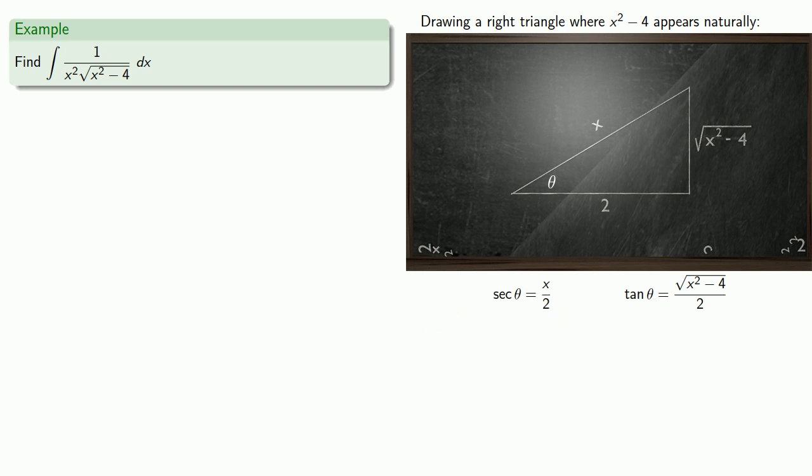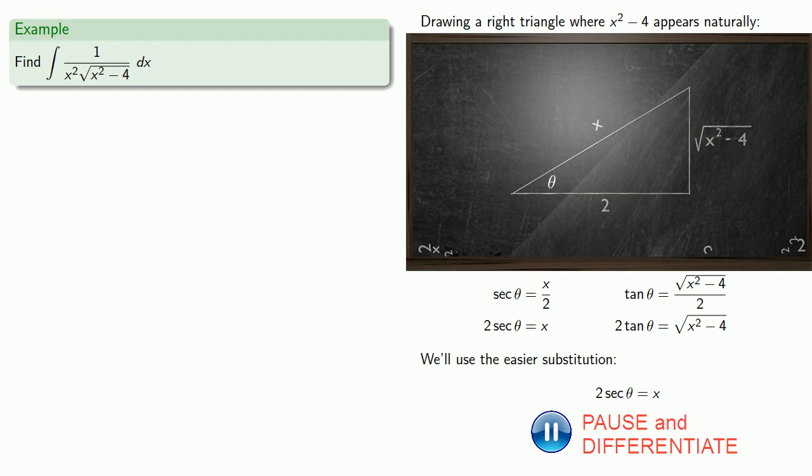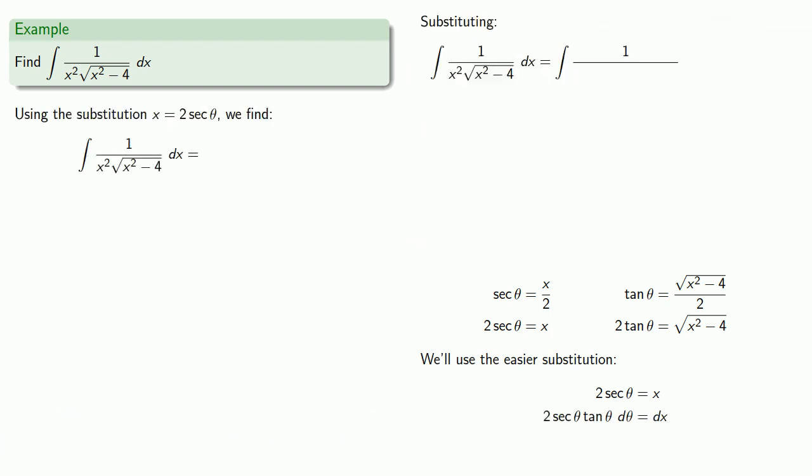Let's do a little bit of algebra and find our differential. We'll substitute: x squared is going to be 4 secant squared theta, square root of x squared minus 4 is 2 tangent theta, and finally dx is...